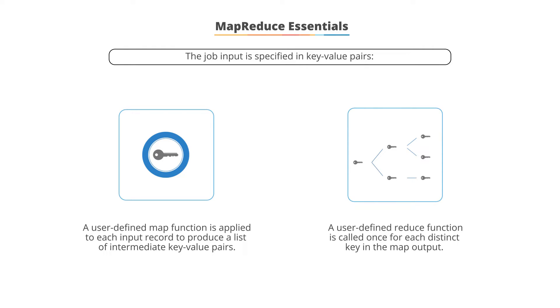Second, a user-defined reduce function is called once for each distinct key in the map output. Then, the list of intermediate values associated with that key is passed.